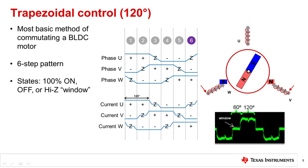As a result, the current waveforms produce a trapezoidal pattern, which gives trapezoidal commutation its name. Each phase current is either positive, negative, or zero during each 60 degree interval. The high Z phase is often referred to as a window when using sensorless technology.